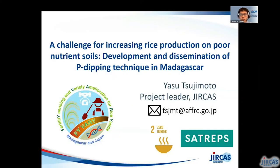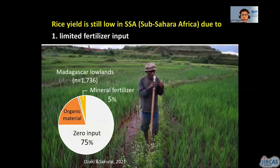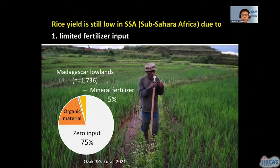Hello, everyone. I'm highly honored to present my work in such an important event between Japan and Africa. Hopefully some audience members get interested in my talk, and I'm always happy to extend any collaboration with you in the near future. As today's webinar emphasizes, one of the major production constraints in Africa is limited fertilizer inputs, because the majority of farmers have little access to markets economically and physically. This pie chart is a result of our survey in Madagascar, the major rice-producing country of Africa — you can see that mineral fertilizer is used in merely 5% of the lowland rice fields.